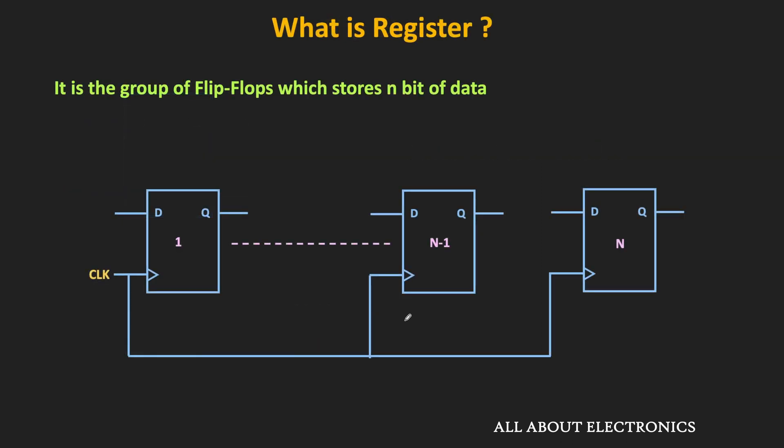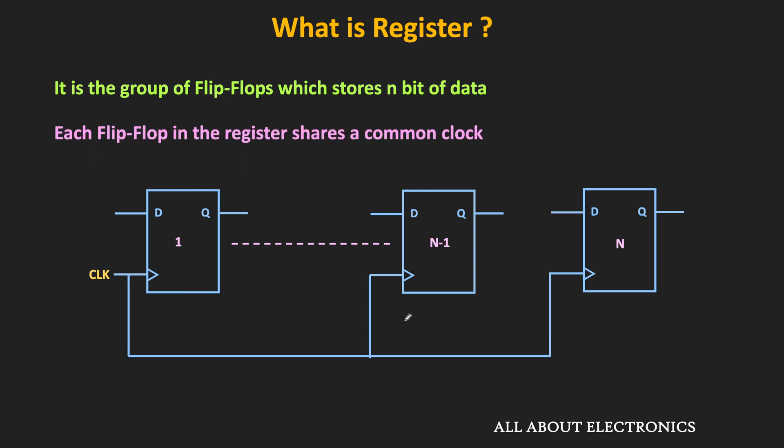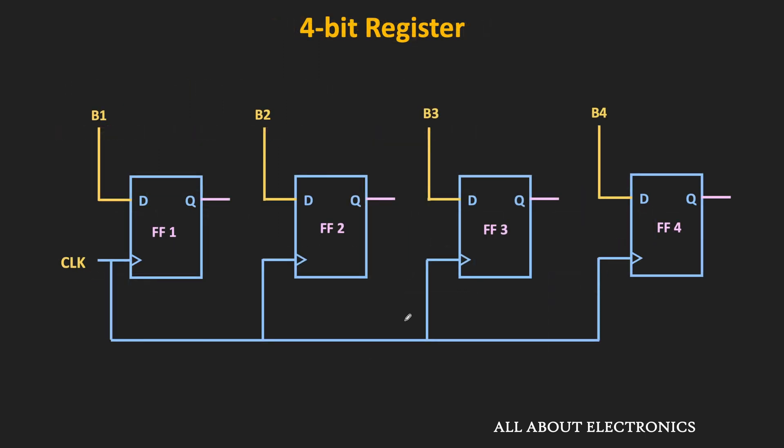So this group of flip-flops, which can store the n-bit of data, are called the registers. This is the diagram of the n-bit register, and here each flip-flop is sharing the common clock. So if n is equal to 4, then we will have the 4-bit register. This is the very basic type of 4-bit register. Now typically in the register, the D flip-flops are used as the memory element.